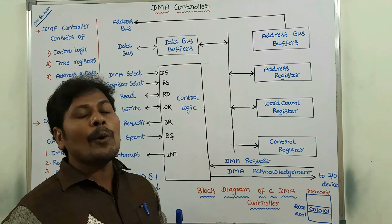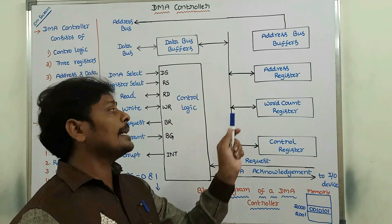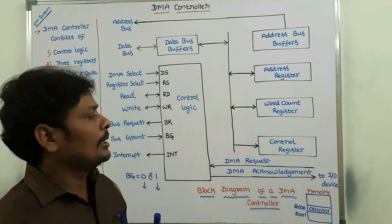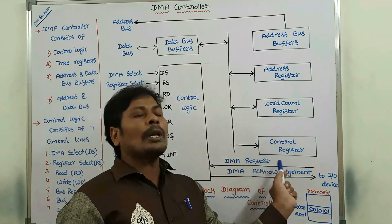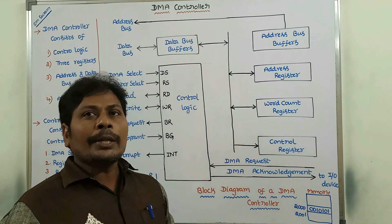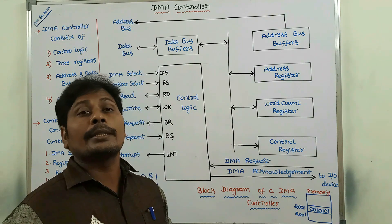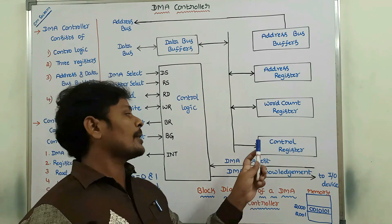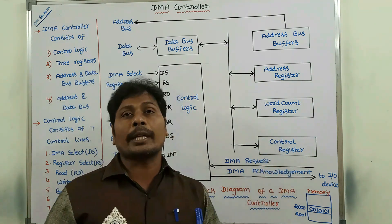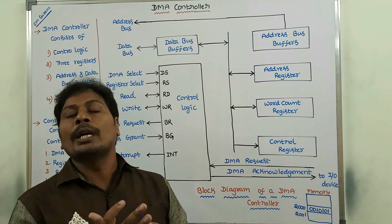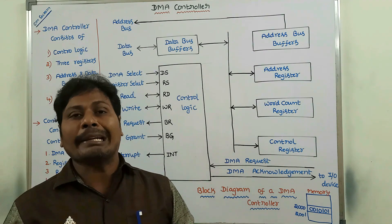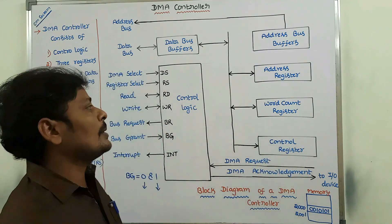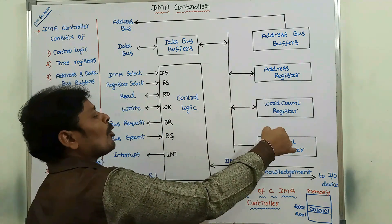We also check whether the count value reaches zero or not. The control register holds the mode in which the data is to be transferred — specifically, which mode of data transfer is to be performed. These are the three important registers used in the DMA controller.